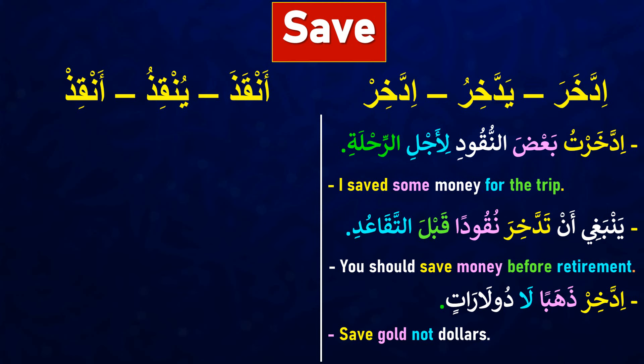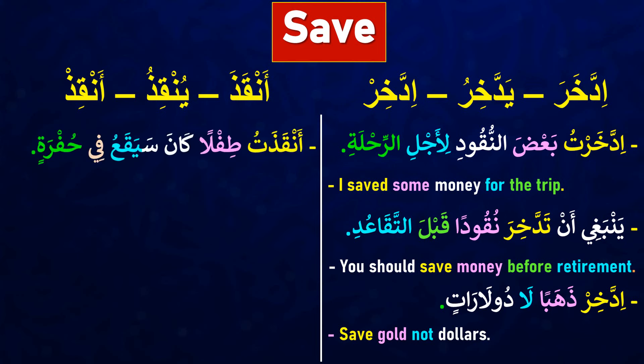أنقذ (anqadha) in the past, ينقذ (yunqidhu) in the present, and أنقذ (anqidh) as a command. Please look at the first example sentence: أنقذتُ طفلاً كان سيقع في حفرة — it means 'I saved a child who was going to fall into a hole.' أنقذتُ — I saved, طفلاً — a child, كان سيقع في حفرة — was going to fall into a hole.